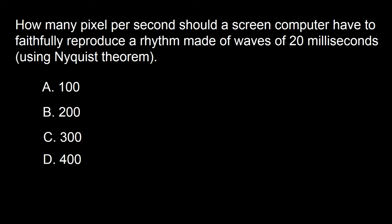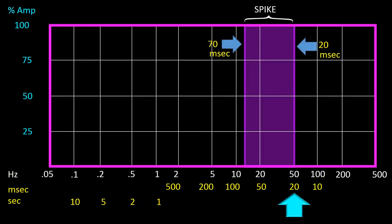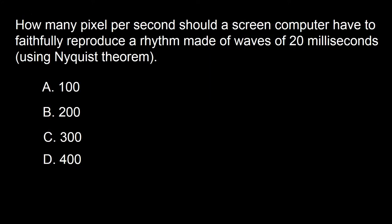Next question: how many pixels per second should a computer screen have to faithfully reproduce a rhythm made of waves of 20 milliseconds, using the Nyquist theorem? A: 100, B: 200, C: 300, D: 400. A 20 millisecond wave corresponds to a 50 Hz wave, which should be multiplied by 2 (Nyquist) to determine the number of pixels needed — giving 100 pixels per second. The answer is A.